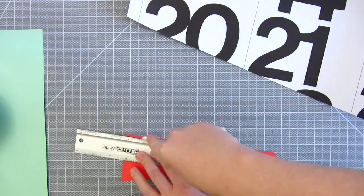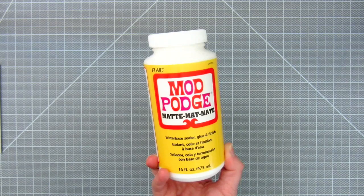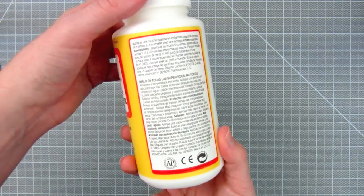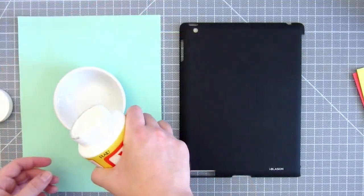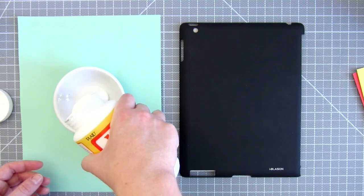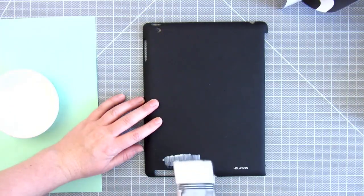Once the arrangement is figured out, it's time to glue. I'll be using this Mod Podge glue for the entire thing. Start gluing the paper on the flat part of the case. We will get to the rounded sides later.